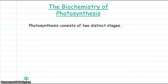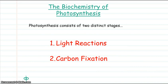If we look at the biochemistry of photosynthesis, it can be divided into two stages. The first stage being the light reactions, and the second stage is called carbon fixation.